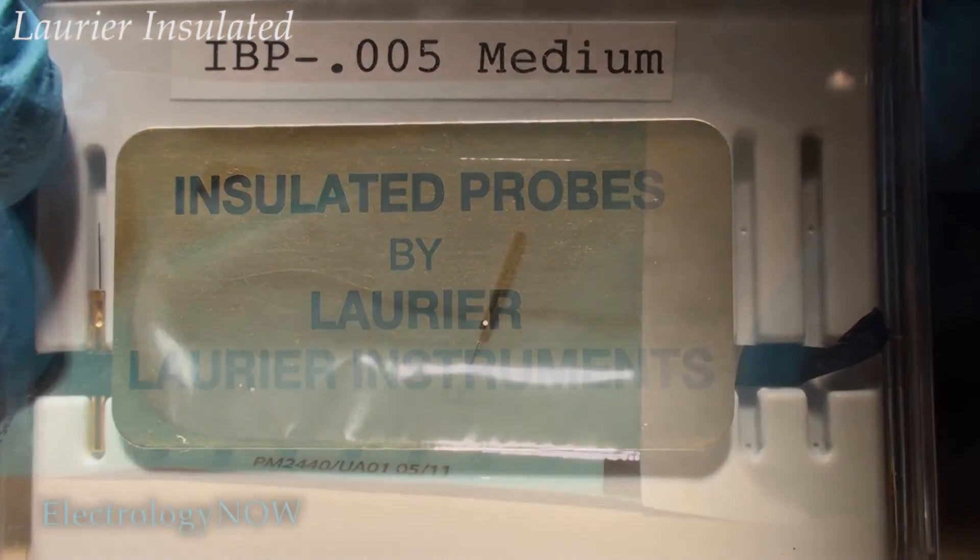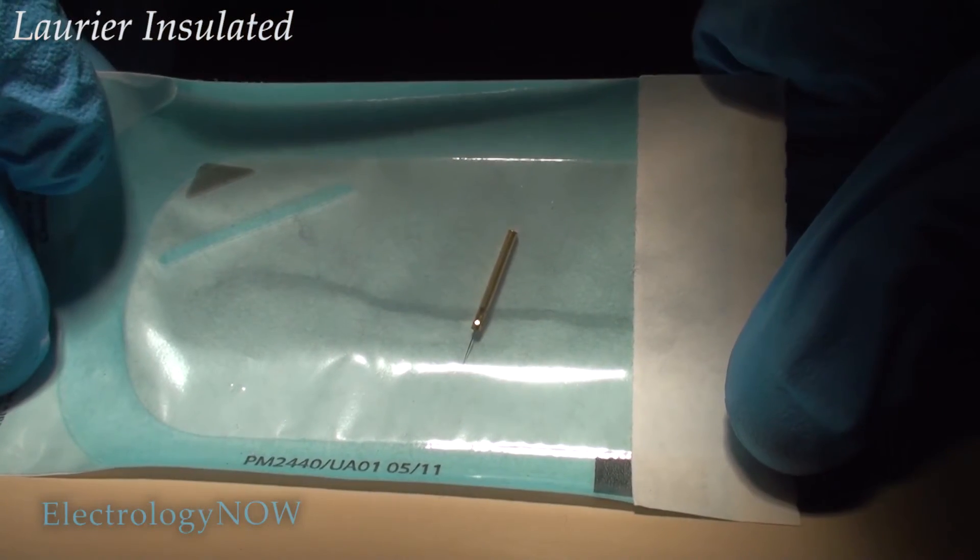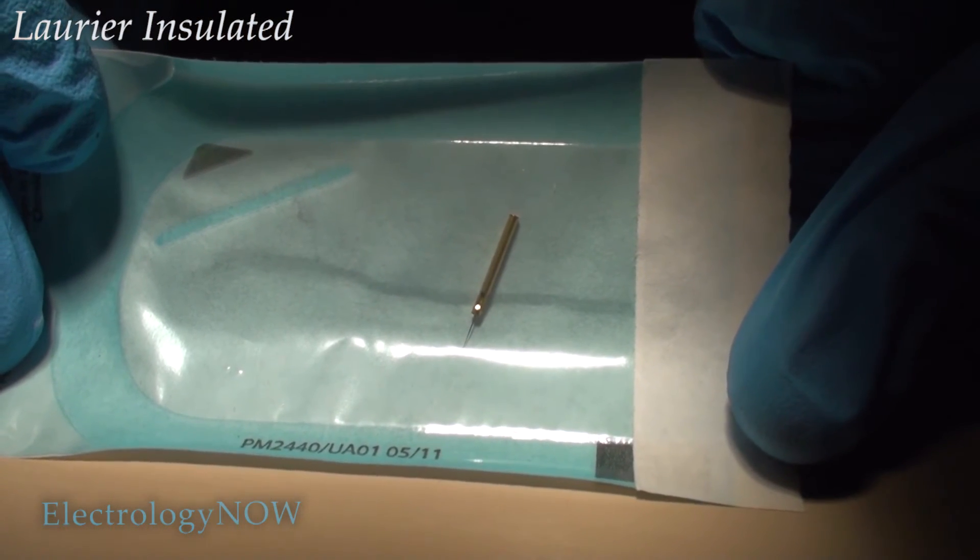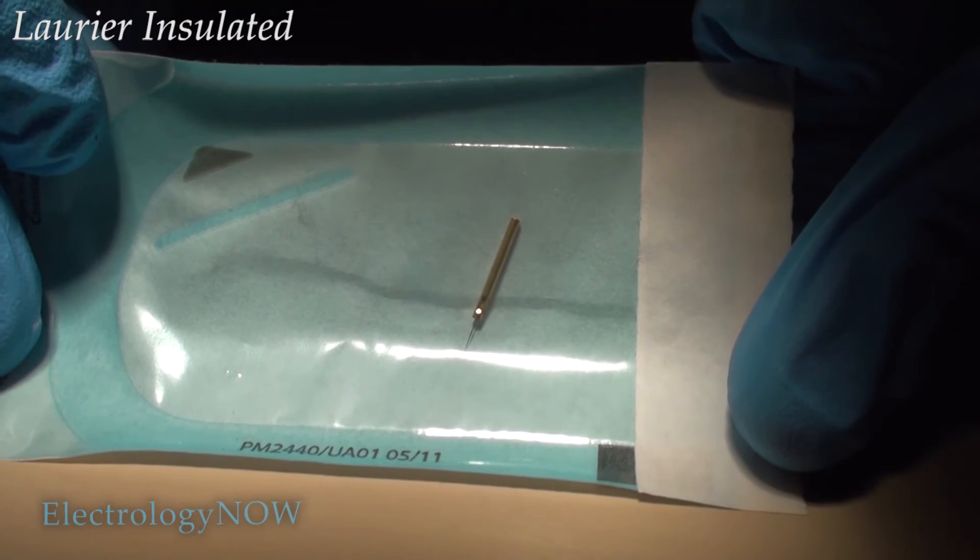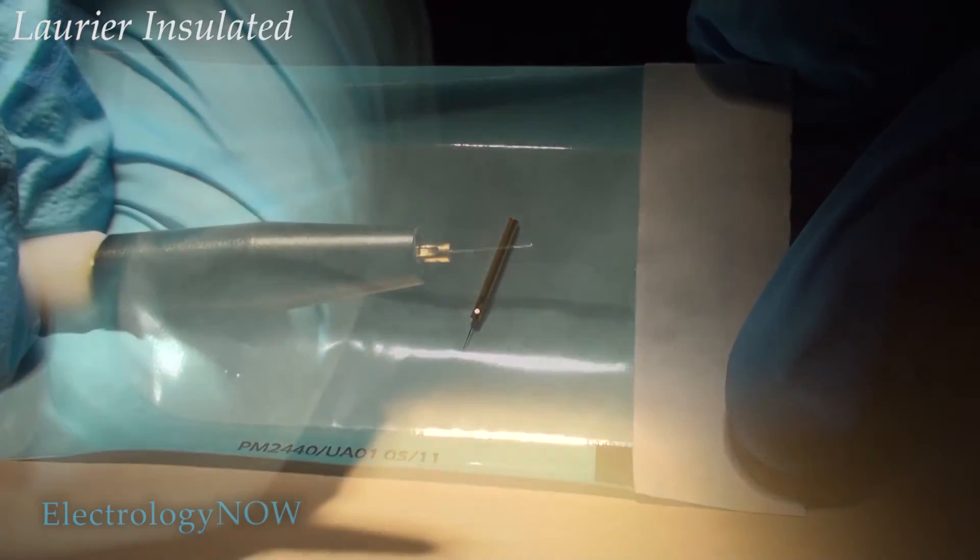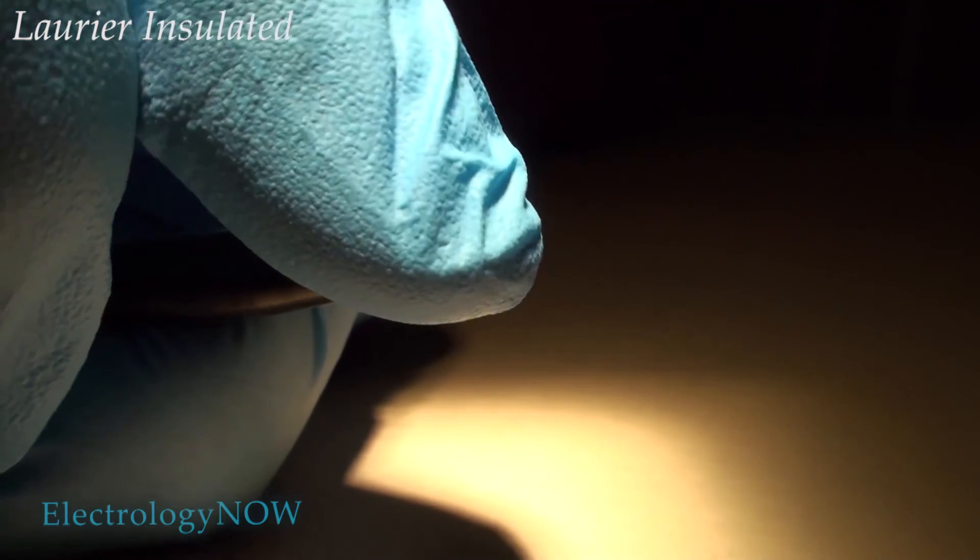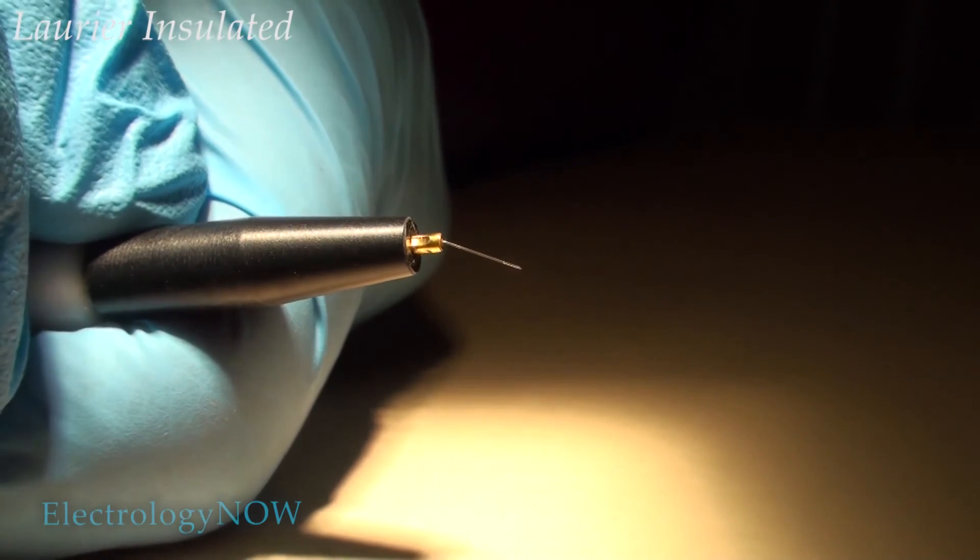The Laurier insulated needles also come pre-sterilized and they come in a little blister pack like the one I'm showing. The Laurier needle is very easy to bend. Just a little bit of pushing with your finger will do the trick.